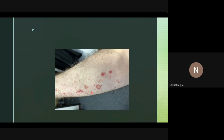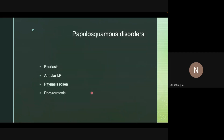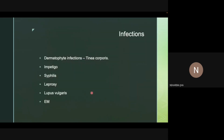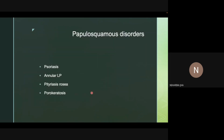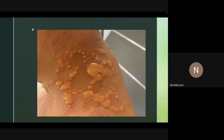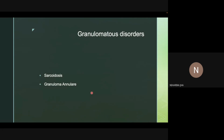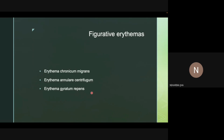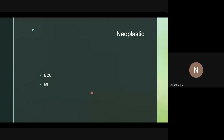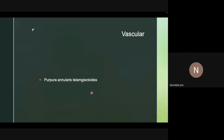To summarize: annular lesions can be seen in multiple disease categories. Infectious causes include tinea, impetigo, syphilis, leprosy (borderline spectrum), lupus vulgaris, and erythema multiforme. Non-infectious causes include papulosquamous disorders (psoriasis, lichen planus, pityriasis rosea, porokeratosis), vesiculobullous disorders (linear IgA/CBDC), granulomatous disorders (sarcoidosis, granuloma annulare), connective tissue disorders (SCLE and neonatal lupus), eczematous disorders (seborrheic and nummular), figurate erythemas, neoplastic lesions (BCC and mycosis fungoides), and vascular lesions (purpura annularis telangiectoides).